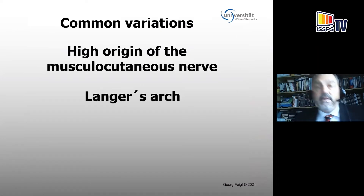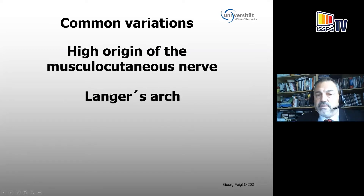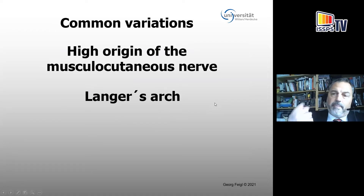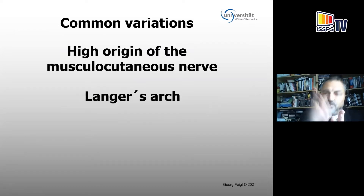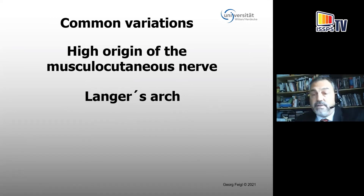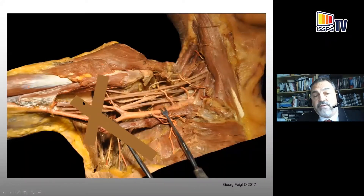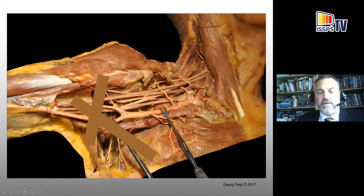Other variations include the high origin of the musculocutaneous nerve, which is not a great problem since the nerve's visibility in the coracobrachialis muscle is quite easy. However, you might not reach the axillary nerve, which is more proximal — but it can be approached by moving the probe more proximal and getting into the quadrangular space. There are also so-called lungus arches — muscular bridges coming from the greater pectoral muscle or the latissimus dorsi to each other — which appear as hypoechogenic structures crossing the area where you perform the axillary brachial plexus block.